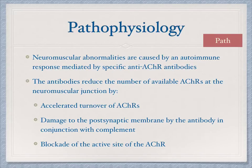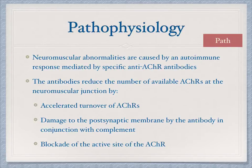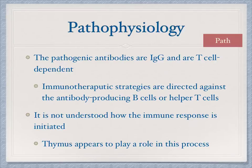As mentioned earlier, the reason these patients are in this condition is an underlying autoimmune process, believed to be mediated by a specific anti-acetylcholine receptor antibody. These antibodies reduce the number of available receptor sites at the neuromuscular junction by accelerating the turnover of receptors, damaging the postsynaptic membrane, and blocking the active sites of available receptors. The pathogenic antibodies are IgG and T-cell dependent, and immunotherapy is directed against the antibody-producing B cells or helper T cells.